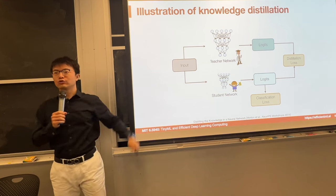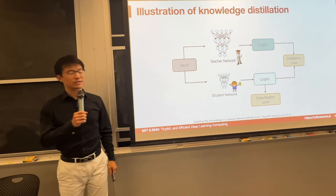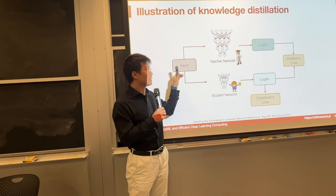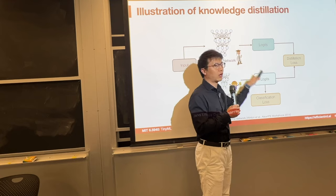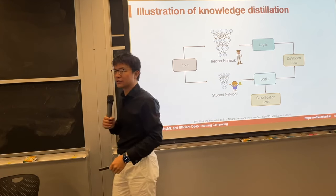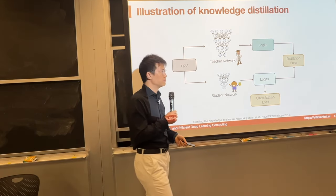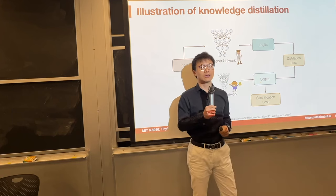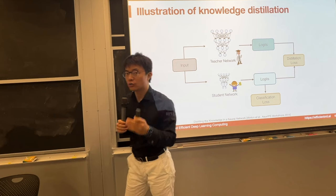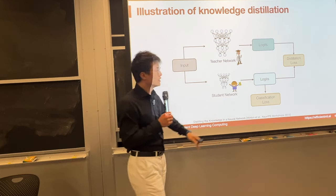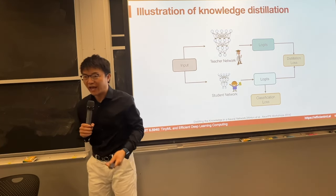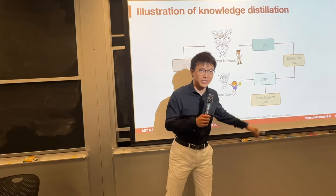This is the illustration of knowledge distillation, where we have a teacher network and a student network. Given the input, both of them produce a logit, and given the logit we can get the classification loss — that's what we normally do. Here we also want to compare the logits from the teacher and student models, and make sure the student's logits mimic the teacher's logits to get extra supervision beyond the classification loss.